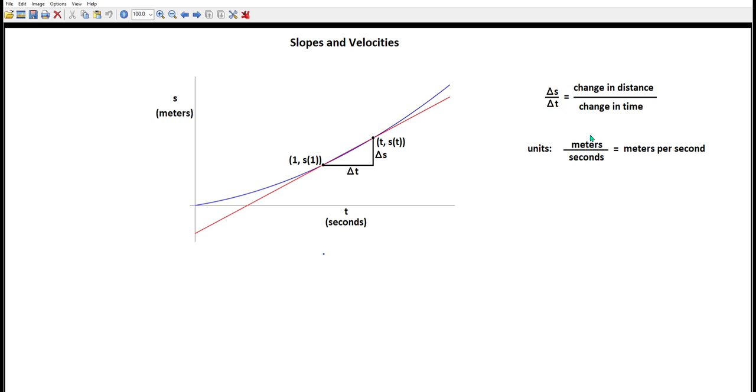And if you look at the units of this thing, delta s is in meters, delta t is in seconds, and that's meters per second, which should sound familiar. Those are the units of velocity.